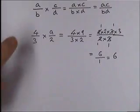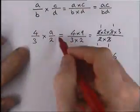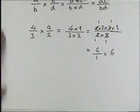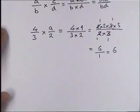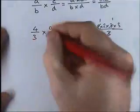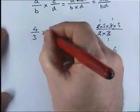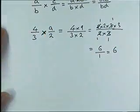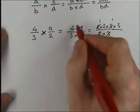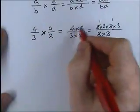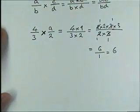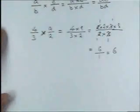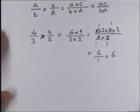So when you're given a fraction, even in this form, you can see if you can simplify it before you do the question — before you actually do the multiplication. This only works with multiplication, because with multiplication you just multiply the numerator and the denominator. So it's always worthwhile looking to see if you can cancel the question.